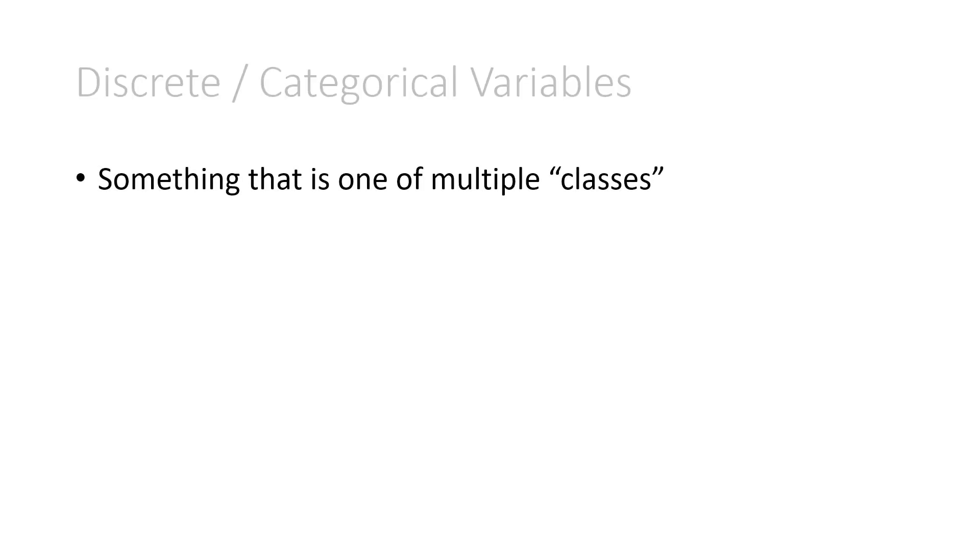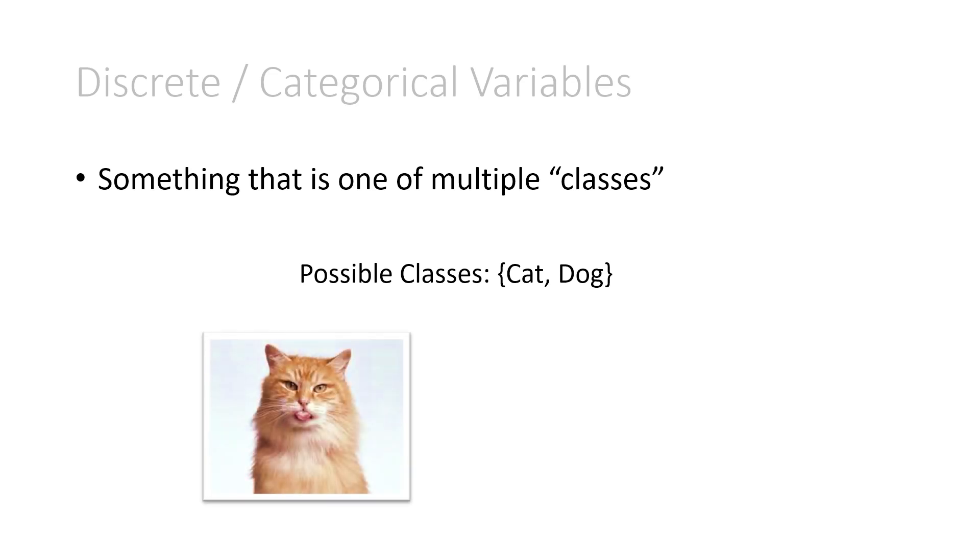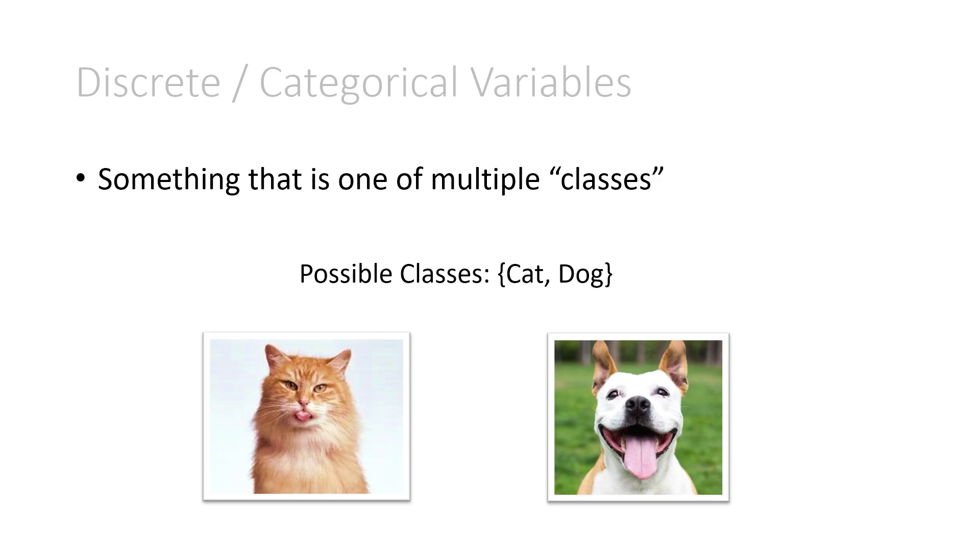Next up we have discrete or categorical variables. Discrete and categorical are considered synonymous. A categorical variable is something that is one of multiple classes. One example could be the possible classes of either cat and dog. This is also called binary because it's just one or the other. There's two different classes only. We have a cat and a dog and you could have many other images all of either cats or dogs. Nothing else is allowed.